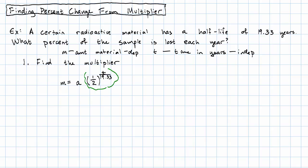To find the multiplier then, a half to the t over 19.33 is a half to the one over 19.33 to the t.